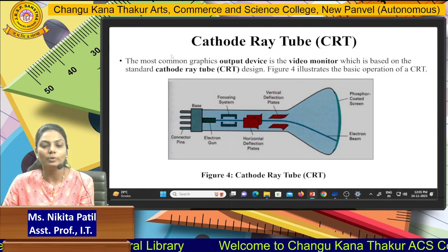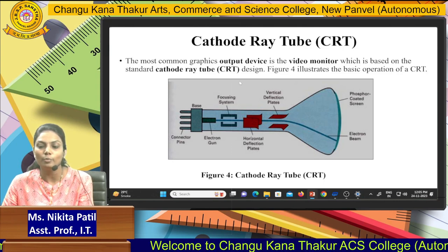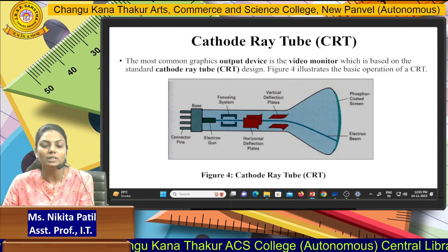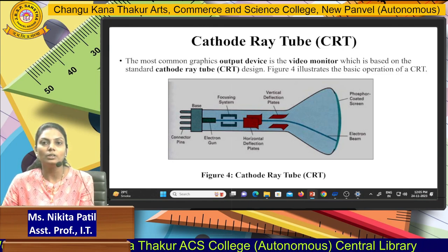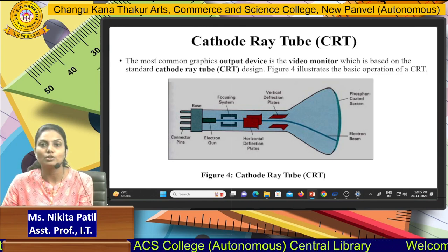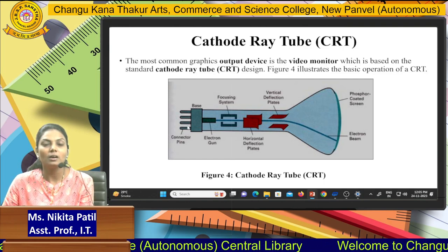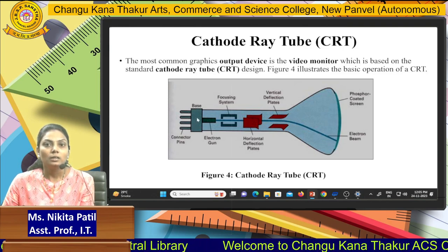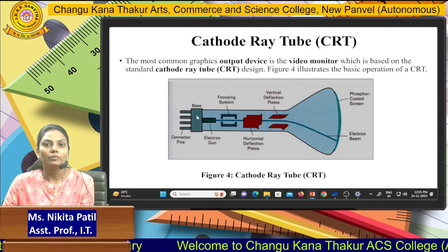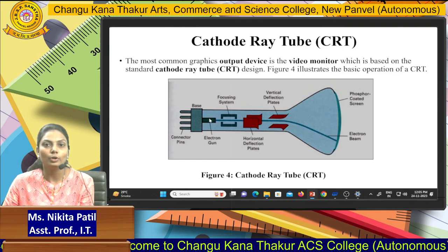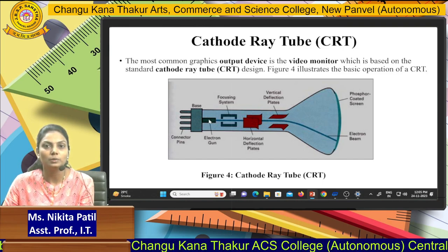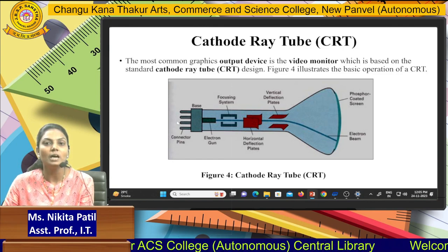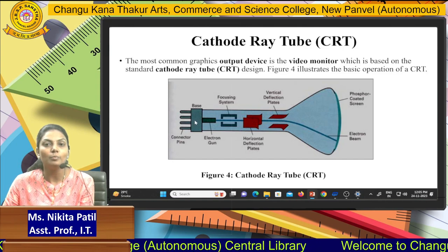The most common graphics output device is the video monitor based on the cathode ray tube. The figure illustrates the basic operations of the CRT. Connector pins are connected to the base. The main components include the electron beam system. When the connector pins are connected to the switch, heating material heats the base.